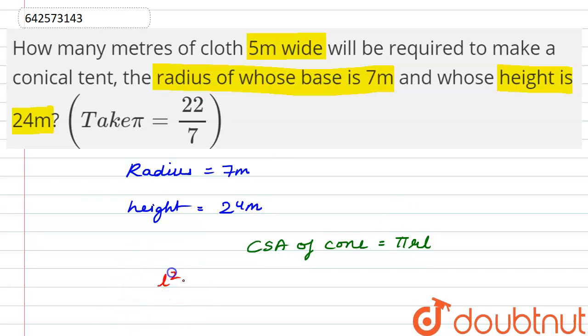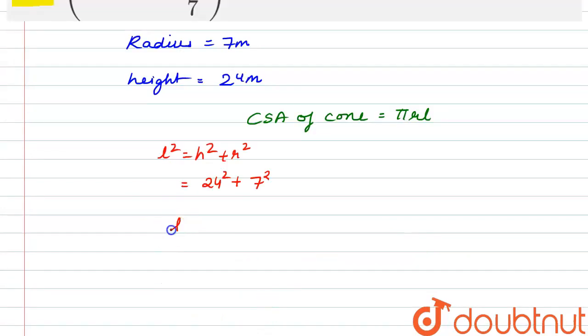So l² = h² + r². This is the formula. So we put the value of h here as 24² plus r as 7². l² comes out as 625, so we have the value of l as 25 meters.